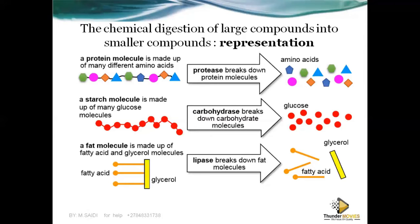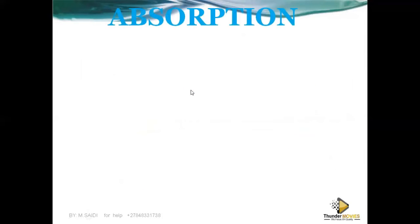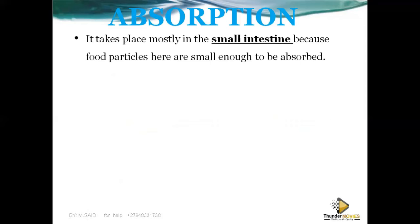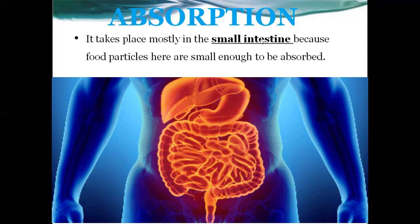After food is broken down into smaller particles, we move to the next step: absorption. Absorption takes place mostly in the small intestine. The small intestine is where the final digestion and absorption of food occurs.